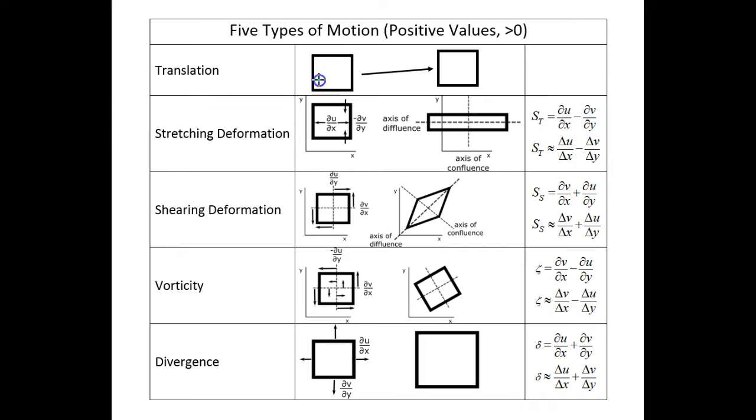Negative translation goes to the left. Negative stretching deformation elongates the parcel in the y direction. Negative shearing deformation elongates the parcel in the northwest-southeast direction.